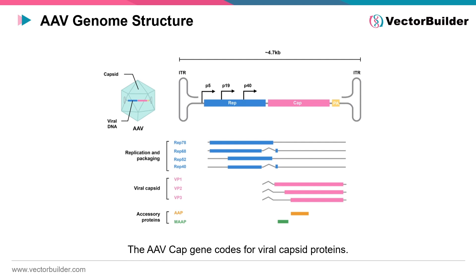The CAP gene plays a pivotal role in the assembly of AAV particles. VP1, 2, and 3 are distinct capsid proteins generated through start codon selection during translation. These capsid proteins self-assemble into icosahedral structures forming the outer shell of the AAV virion. VP3 is the predominant capsid protein, constituting the majority of the capsid and providing structural integrity. VP1 and 2 play essential roles in viral infectivity by mediating interactions with host cell receptors and participating in endosomal escape during cellular entry.